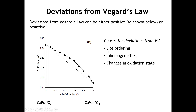Another phenomenon that can lead to deviations from Vegard's Law is when you go from a random arrangement of spheres that are different in size to an ordered arrangement. If you do get that ordering, it is oftentimes a more efficient packing, and that will lead to a negative deviation from Vegard's Law.